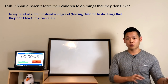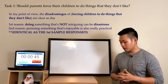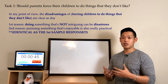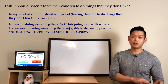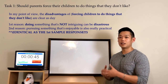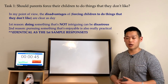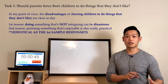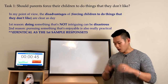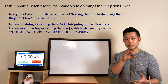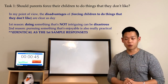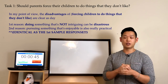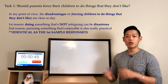The first reason will be very similar to the previous sample response, but adjusted: 'Doing something that's not intriguing can be disastrous.' Since we're focusing on the downsides, the adjective needs a negative connotation. The second reason stays the same: 'Pursuing something that's enjoyable is also really practical.' For the first detail, I originally said I have a hard time buckling down — we'll need to change 'I' to 'most children.'